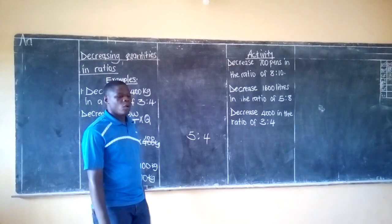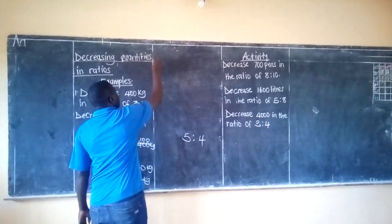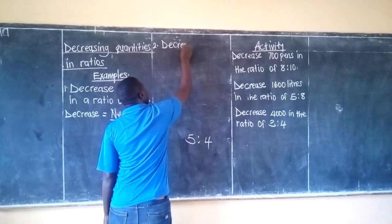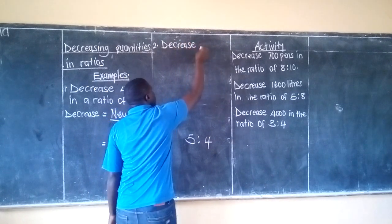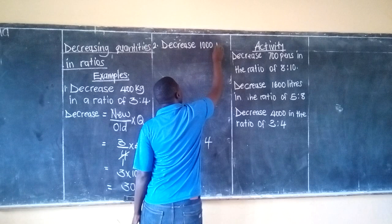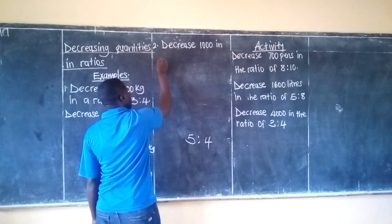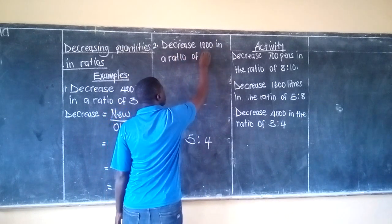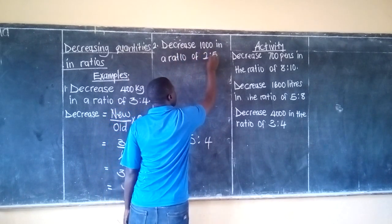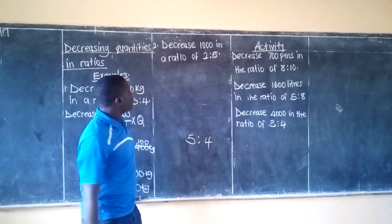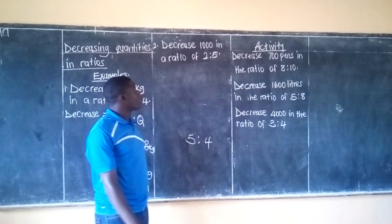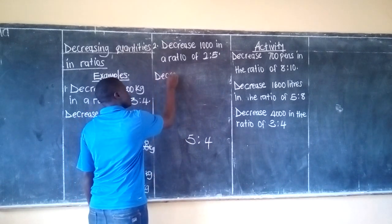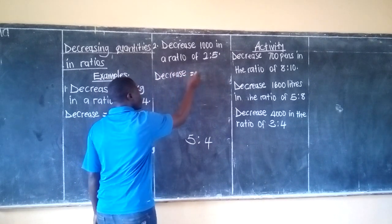That is example number 1. We shall move to example number 2: decrease 1,000 in a ratio of 2 to 5.